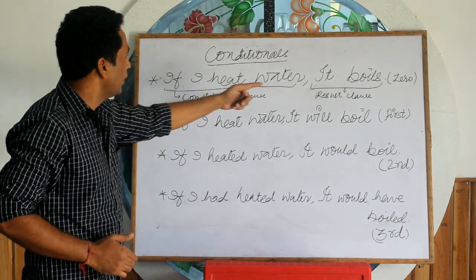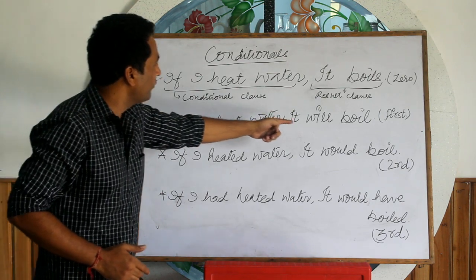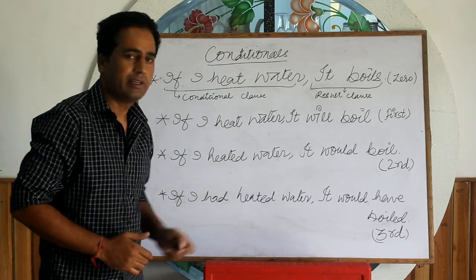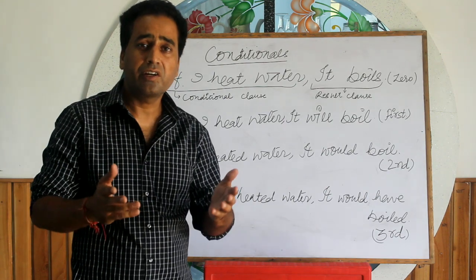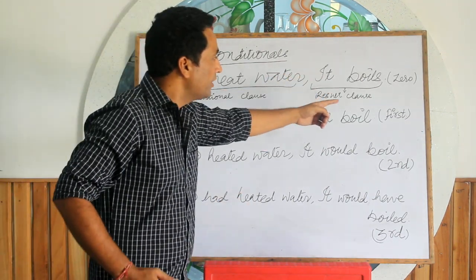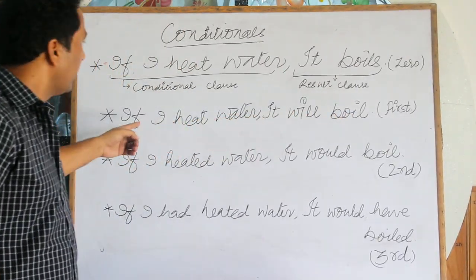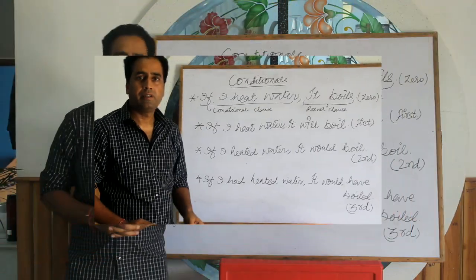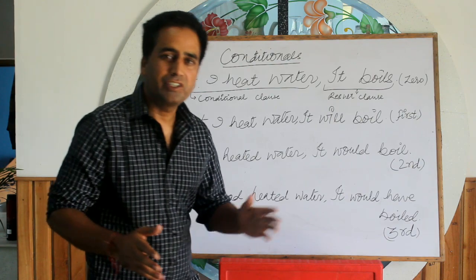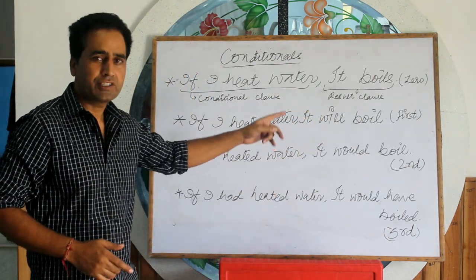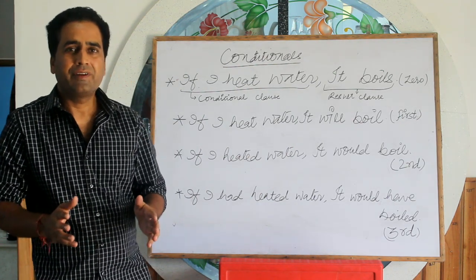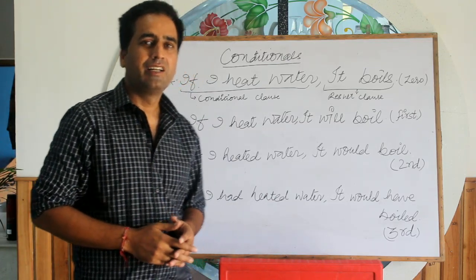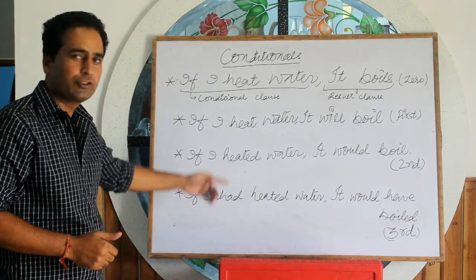If I heat water, it boils. If I heat water, it will boil. If I heated water, it would boil. If I had heated water, it would have boiled. There are four types of conditionals: zero conditional, first conditional, second conditional, and third conditional. Today I am dealing with the first two types — the zero conditional and the first conditional. I recommend you take a screenshot of these examples for your study purpose.